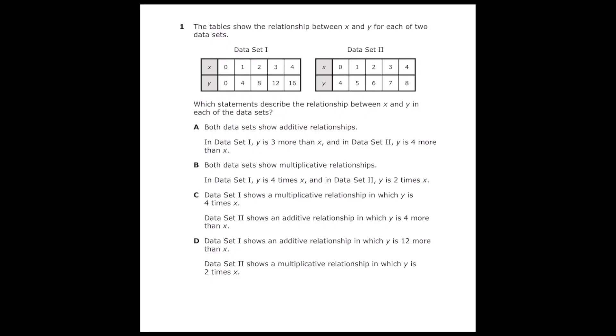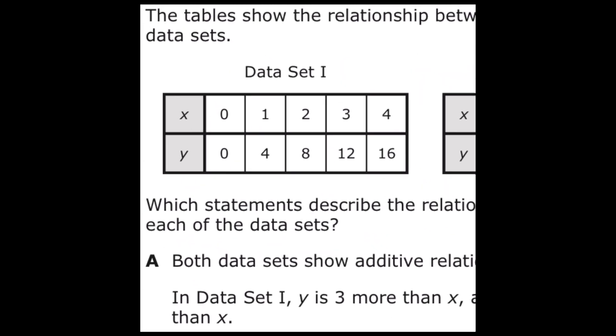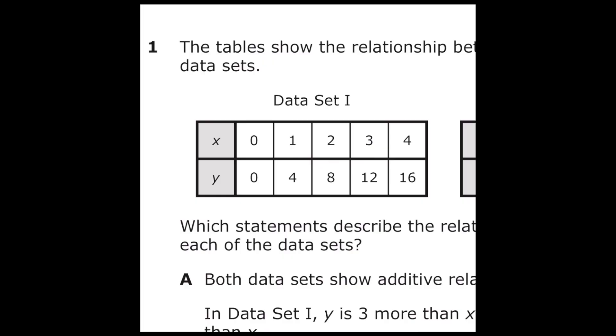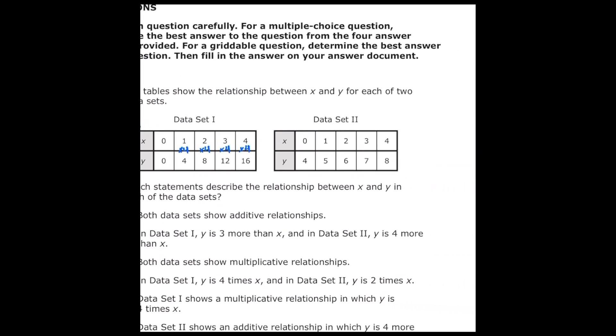To start off, I'm going to take a look at data set number one. If I'm just looking at this table, I'm noticing that each x value is being multiplied by four to get the y value. So I'm just going to make a note over here that this table is times four every single time.